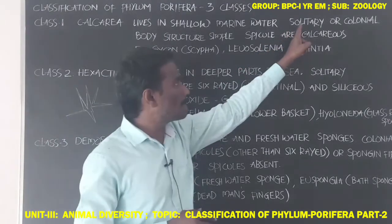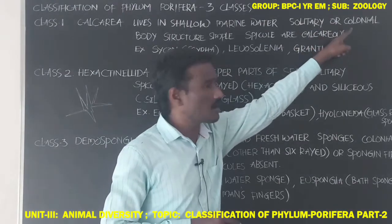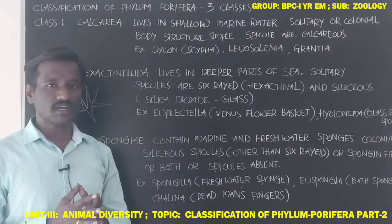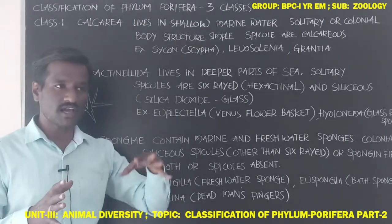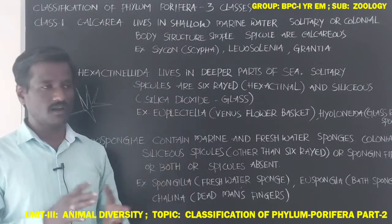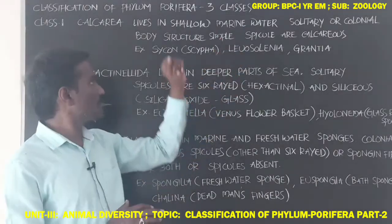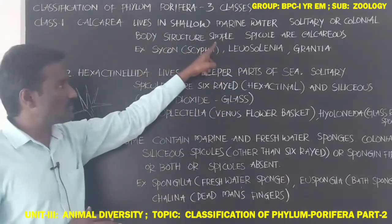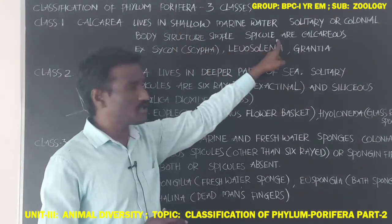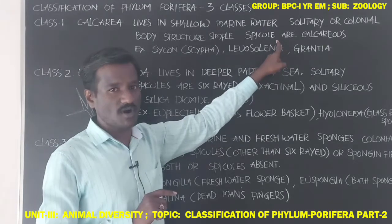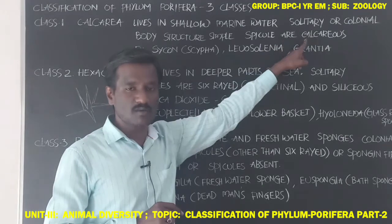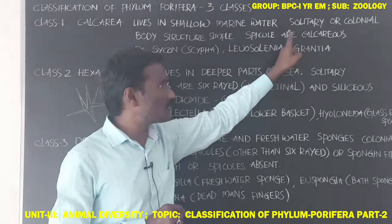Some Calcarea sponges are also colonial, meaning they form a colony where sponges of the same species live together. The body structure is simple. Spicules are the skeletal structures present in the body, and in Calcarea these spicules are made with calcium carbonate, hence called calcareous spicules.